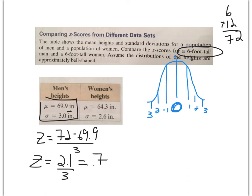For the men, this person who's 6-foot tall is about 0.7 above it. The average man is 69.9 inches tall, and we're comparing a man who's slightly taller. We would expect the z-score to be slightly higher than the average, so slightly higher than 0. The z-score is 0.7. Let's see how the women fare.